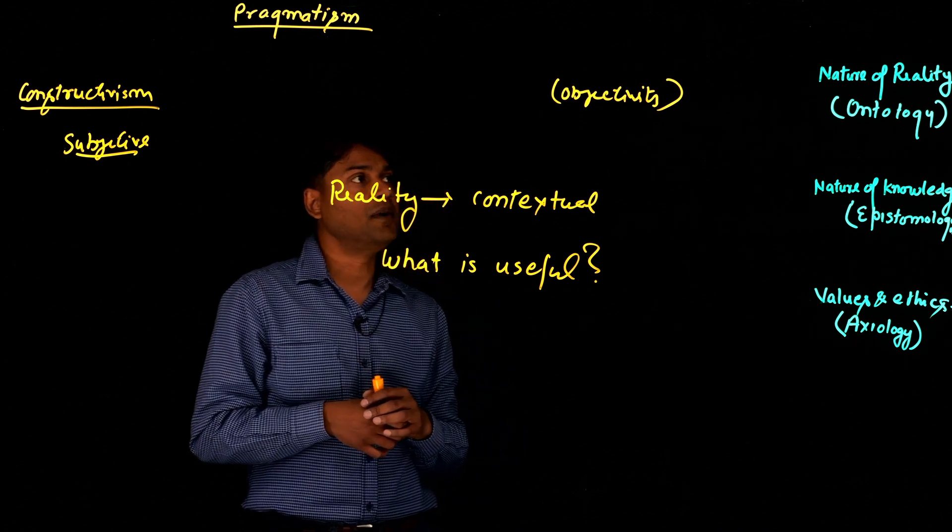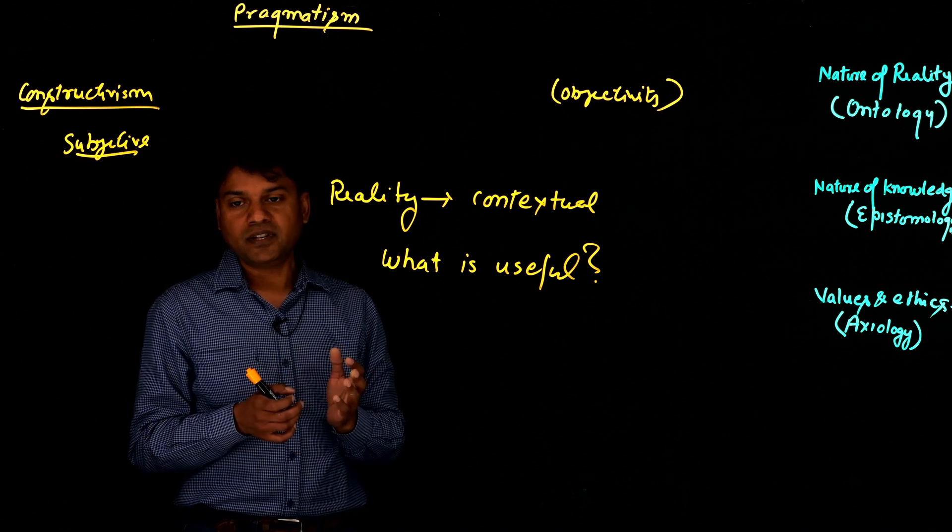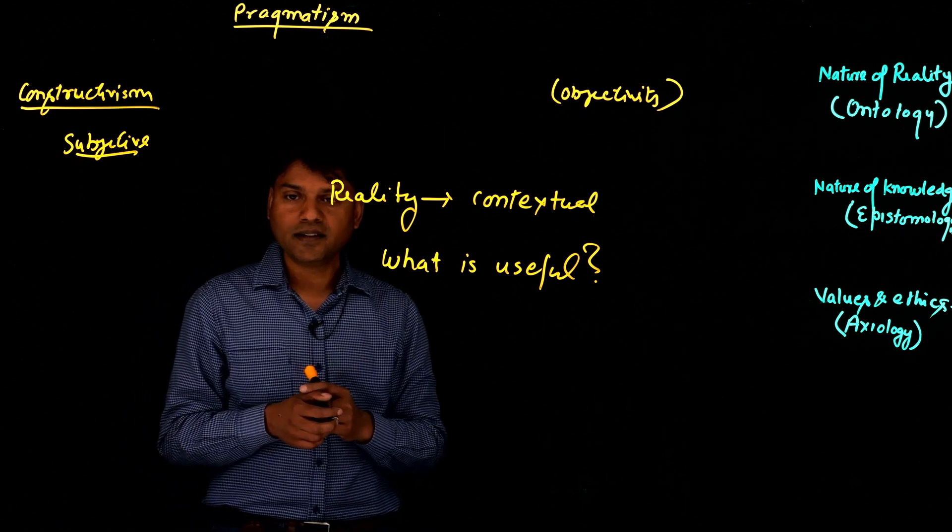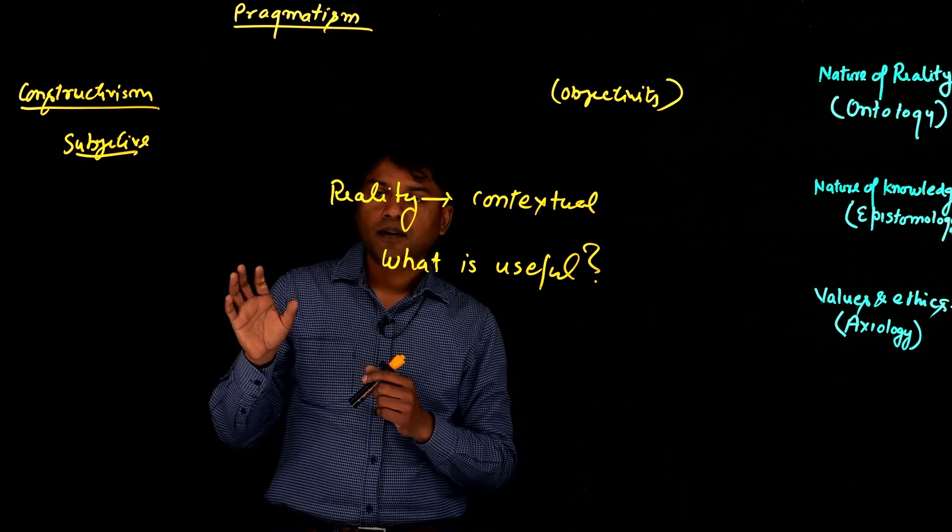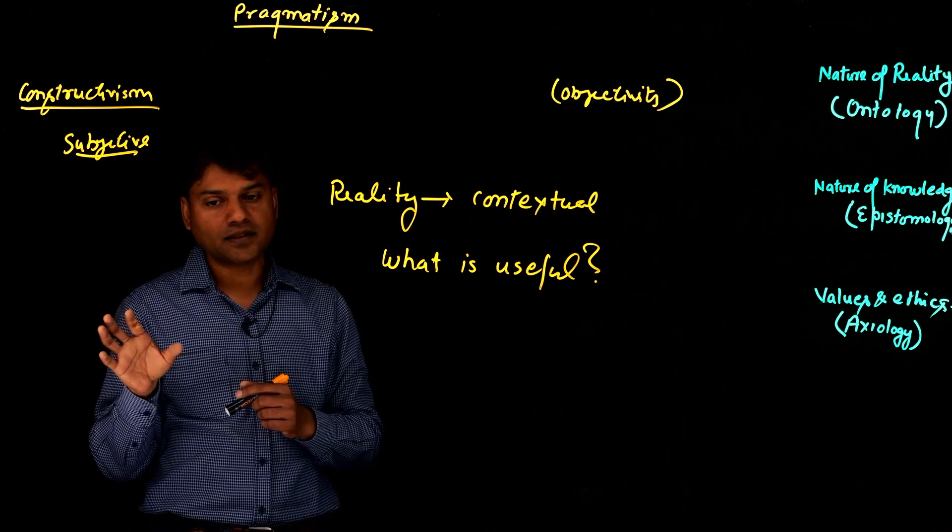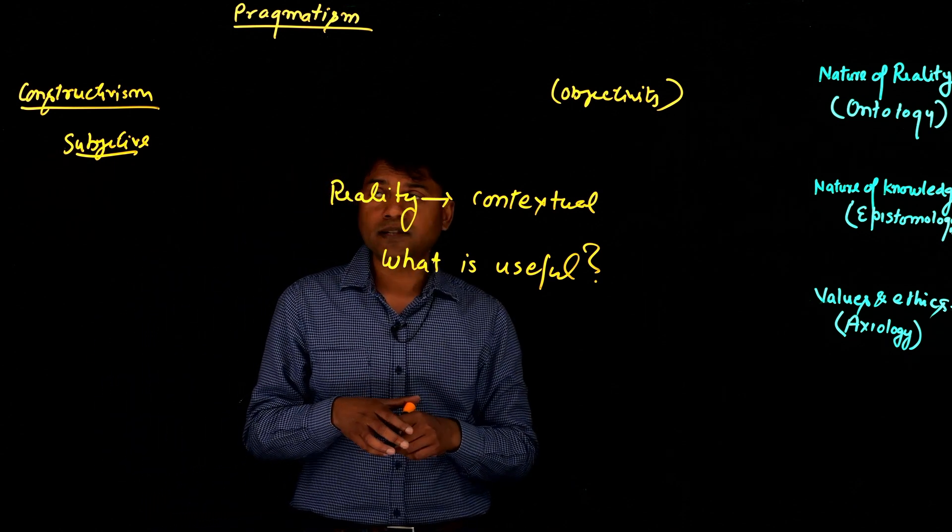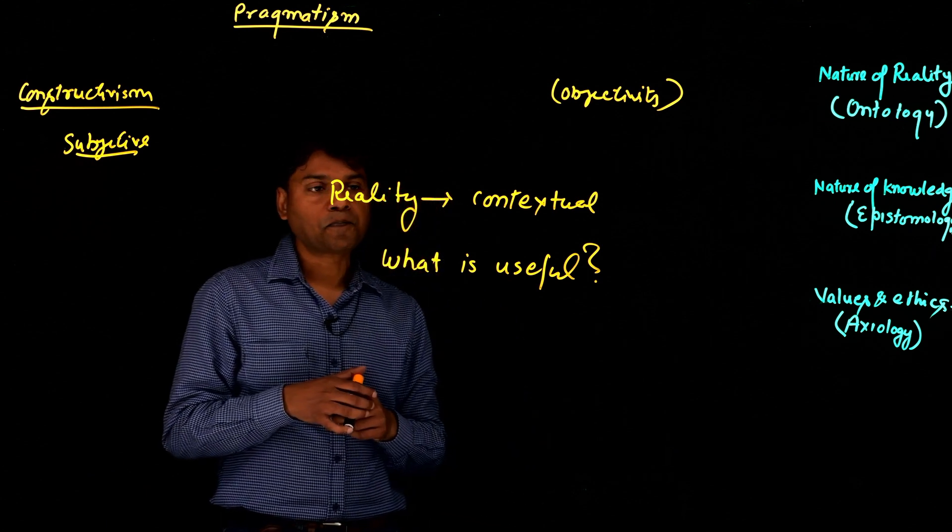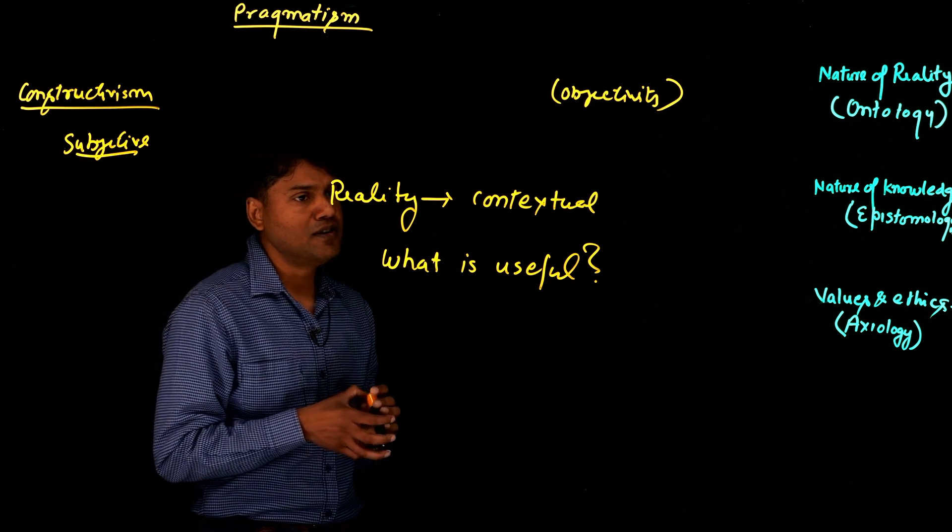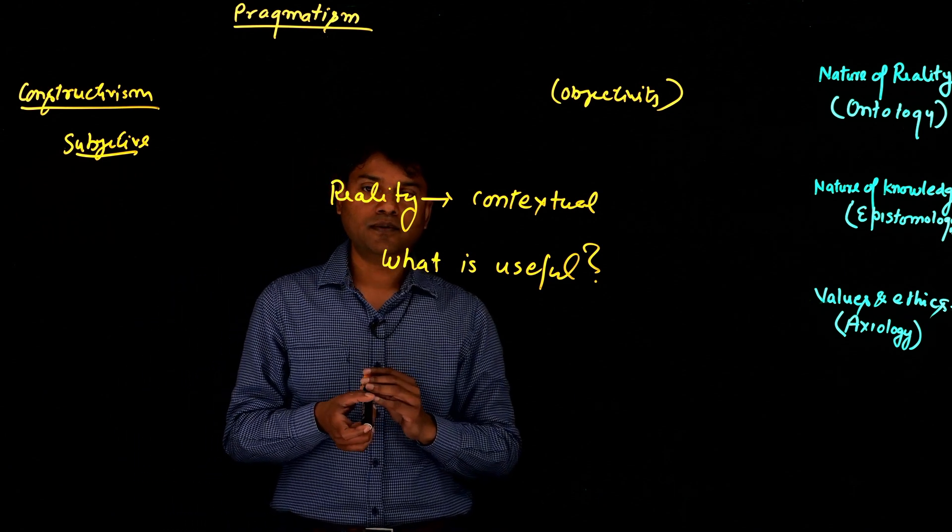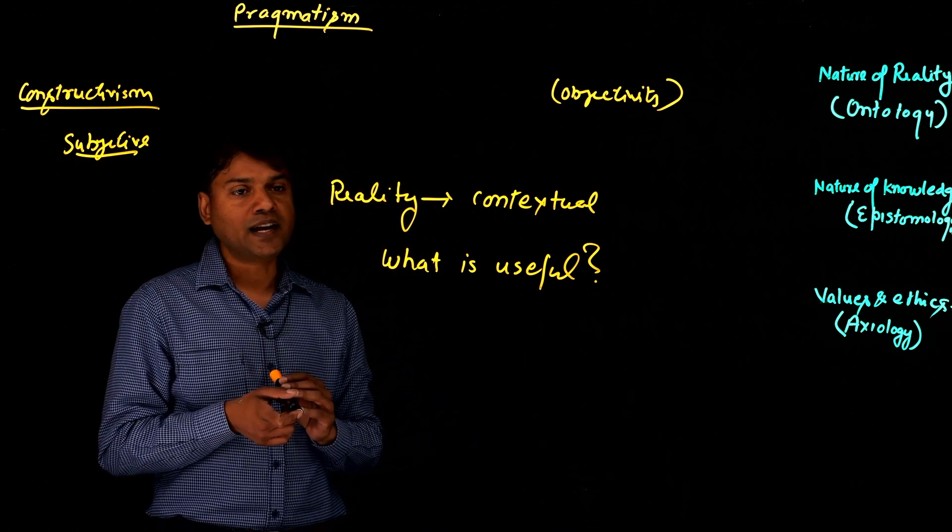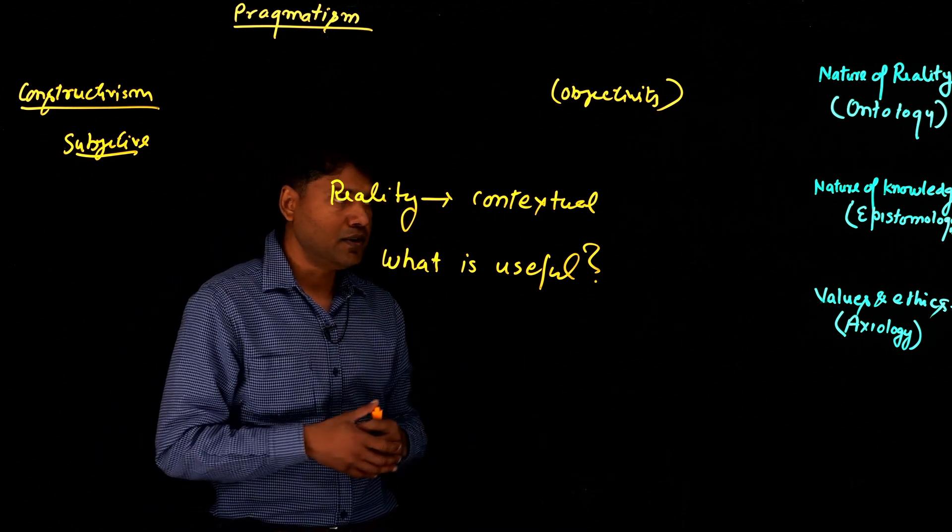So that's the approach of pragmatists when we think about the nature of reality. As I said previously, according to pragmatists, reality is context-based. So when we are trying to understand any reality, we need to understand the context. And maybe sometimes it's objective, maybe sometimes it's subjective. And we are not focused on the nature of reality. We are more focused on what is useful to focus, what is important to address and how we can address real-world problems.